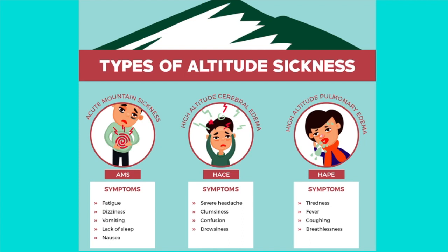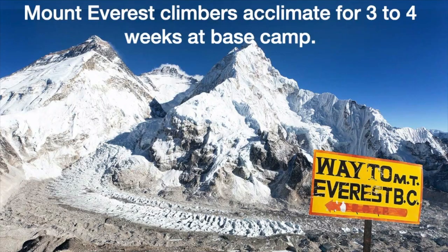Many people who ascend to a moderate or high altitude will experience acute altitude sickness. Symptoms typically begin between 6 to 48 hours after arriving at a higher altitude and include headache, nausea, fatigue, dizziness, and disturbed sleep. But when people are exposed to a high altitude for several days or weeks, their bodies can begin to adjust to the low-oxygen environment — a process called acclimation.